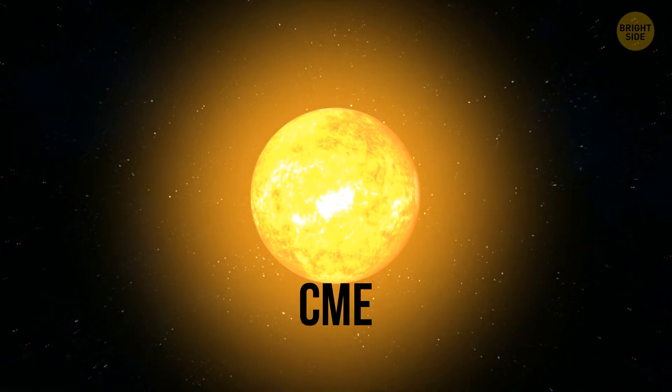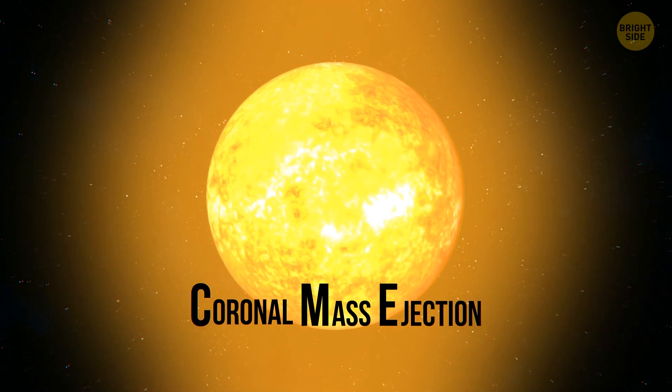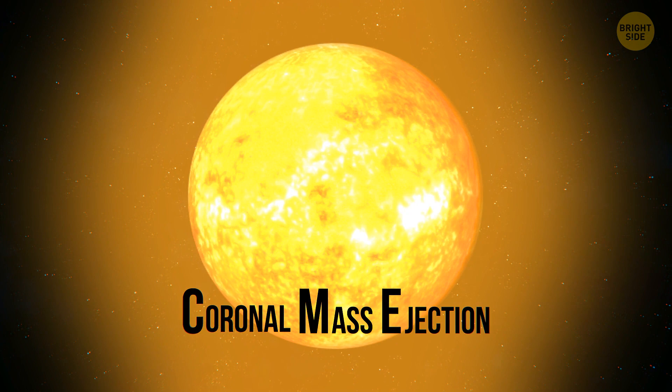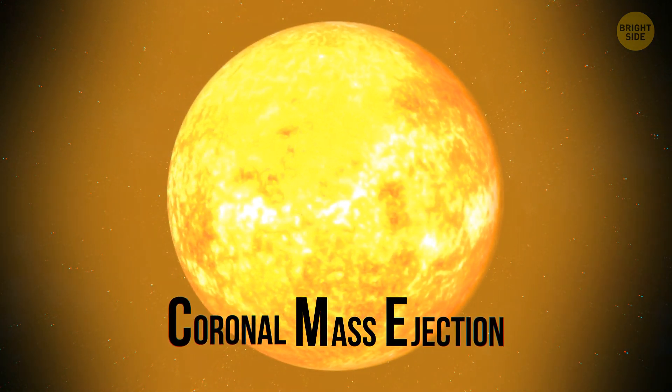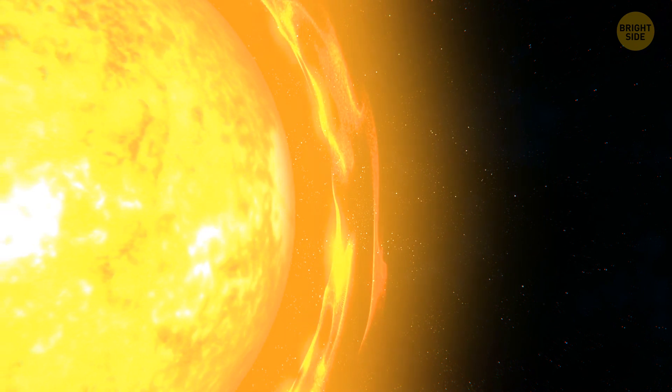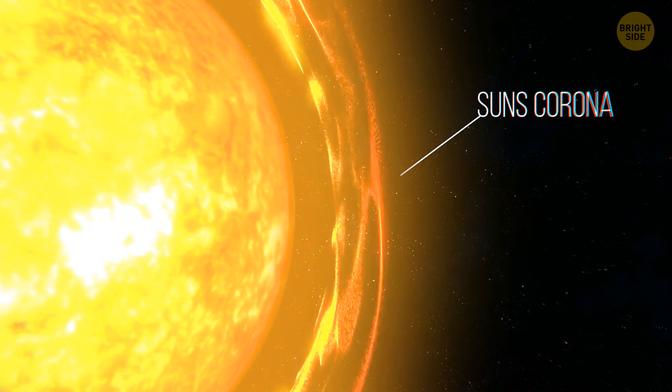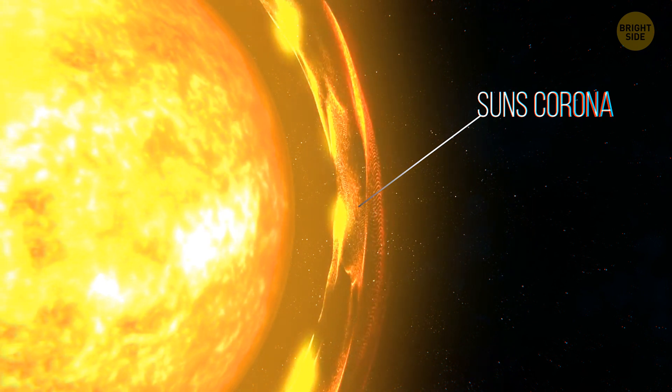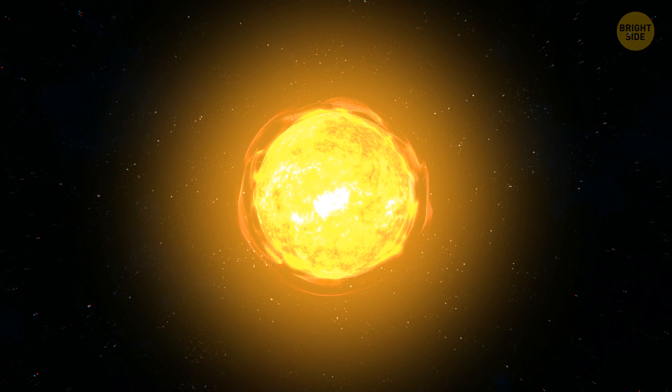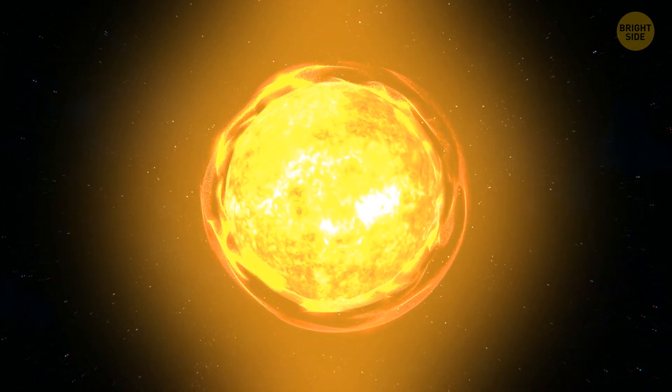But solar flares are not the biggest explosions on the sun. CME stands for coronal mass ejection, and these are much more massive than solar flares and more dangerous when they're headed our way. As the name indicates, coronal mass ejections are explosions that originate on the sun's corona. They hurl millions of tons of hot ionized gases outward from the corona. The word corona is derived from the Latin word for crown, and it's the layer of thin bright gas around the sun's surface.